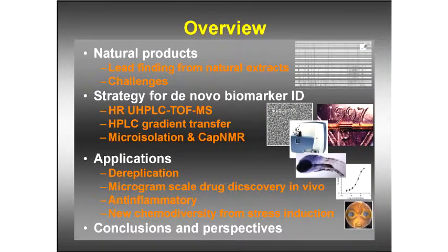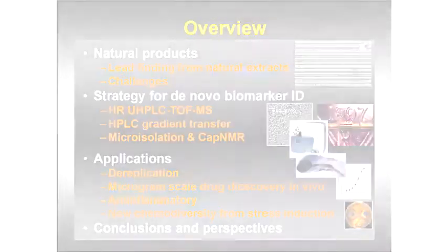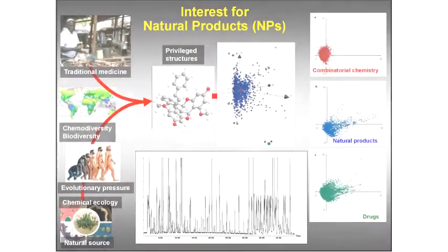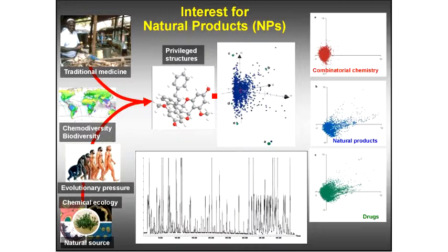We have different types of activities: bioactivity-guided fractionation methods to go straight to pure bioactive compounds; metabolite profiling methods for early and rapid online identification of natural products directly in complex mixtures; and bioassays combined with HPLC for biological profiling, so we can target, for example, antifungal compounds directly from an HPLC chromatogram and go very rapidly to bioactive compounds.